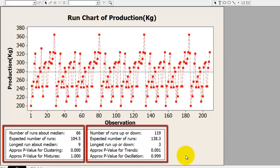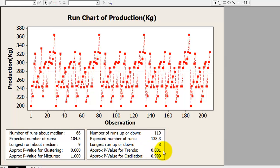In this case, you can see that the p-value for cluster is 0, while for the trend it is 0.001, which means there is evidence of cluster and trend in the data, meaning the data is non-random and non-stable.